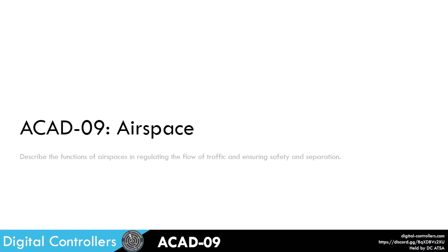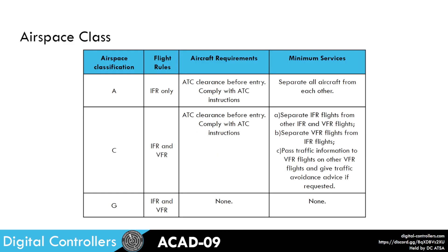Hello everyone and welcome to ACAD 09, which is going to be an introduction to airspace and the functions of airspaces in regulating the flow of traffic and ensuring all of the many safety regulations. So let's first have a look at airspace class. In DC we use three airspace classifications: Alpha, Charlie, and Golf.